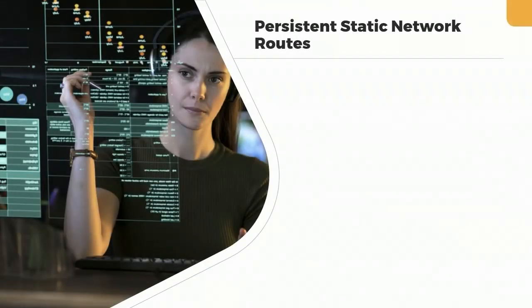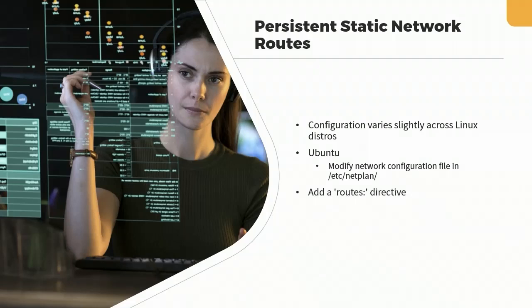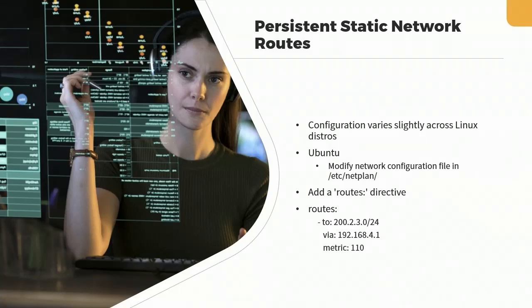These commands only persist for the current session. To make routes persistent in Ubuntu Linux, modify the /etc/netplan configuration file and add a routes directive. Under routes, add a to entry with the target network, followed by via with the router IP, and assign a metric value. When you have multiple routes, metric values determine the most efficient path. Run sudo netplan apply to put changes into effect.